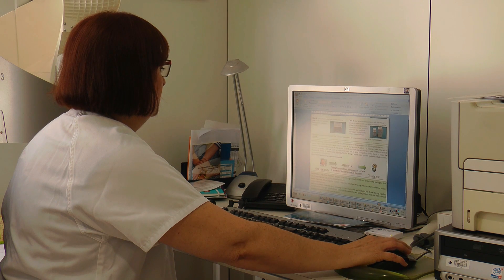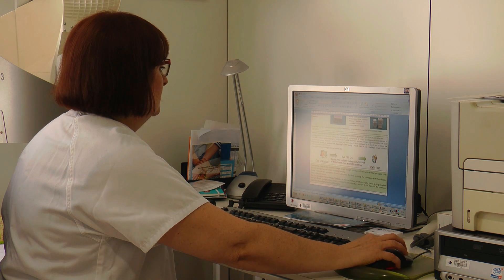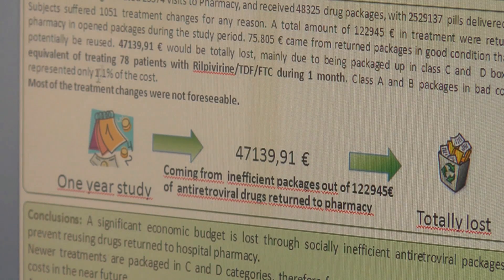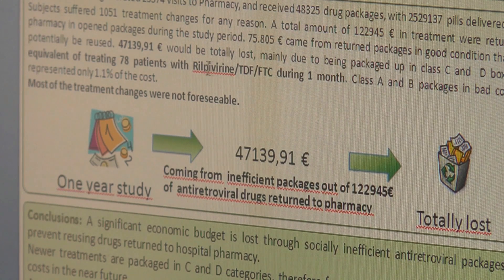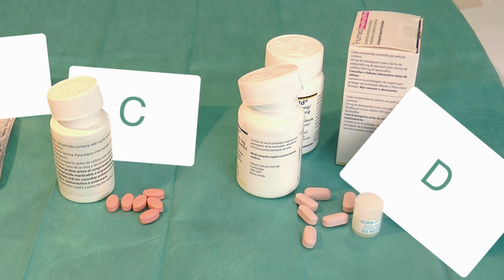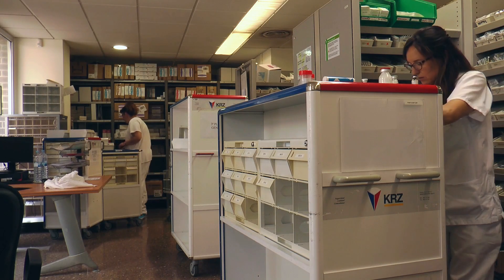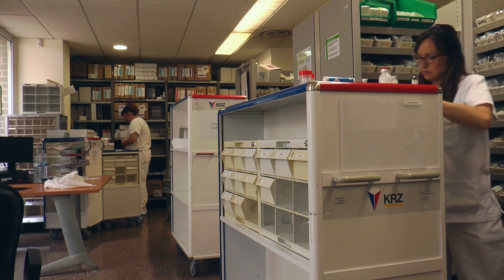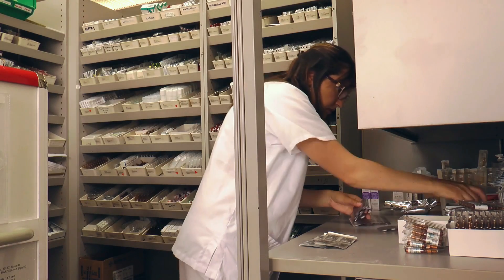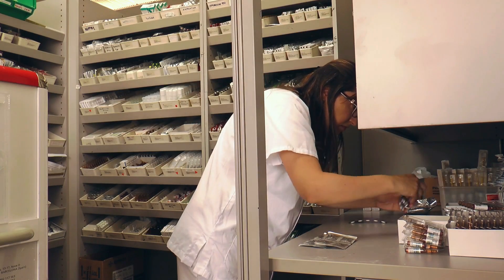We have classified all the current antiretroviral specialties depending on their social efficiency as supplied in Spain, United Kingdom, and USA. The USA packaging shows a greater deal of Class C and D bottles compared to Europe. Unfortunately, newer drugs are being packaged in Classes C and D, so the hidden costs would be maintained. Any improvement by manufacturers of social efficiency of packages should minimize these hidden costs that at the moment are being paid by National Health Services.